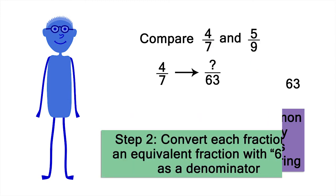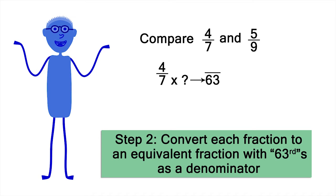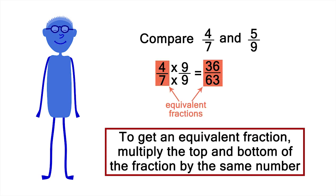Now, let's convert 4 sevenths to an equivalent fraction that has sixty-thirds as the denominator. What do you have to multiply 7 by to get 63? 9. To make an equivalent fraction, whatever you multiply the bottom half of a fraction by, you also have to multiply the top half of the fraction by. 4 times 9 is 36. So, 4 sevenths and 36 sixty-thirds are equivalent fractions.